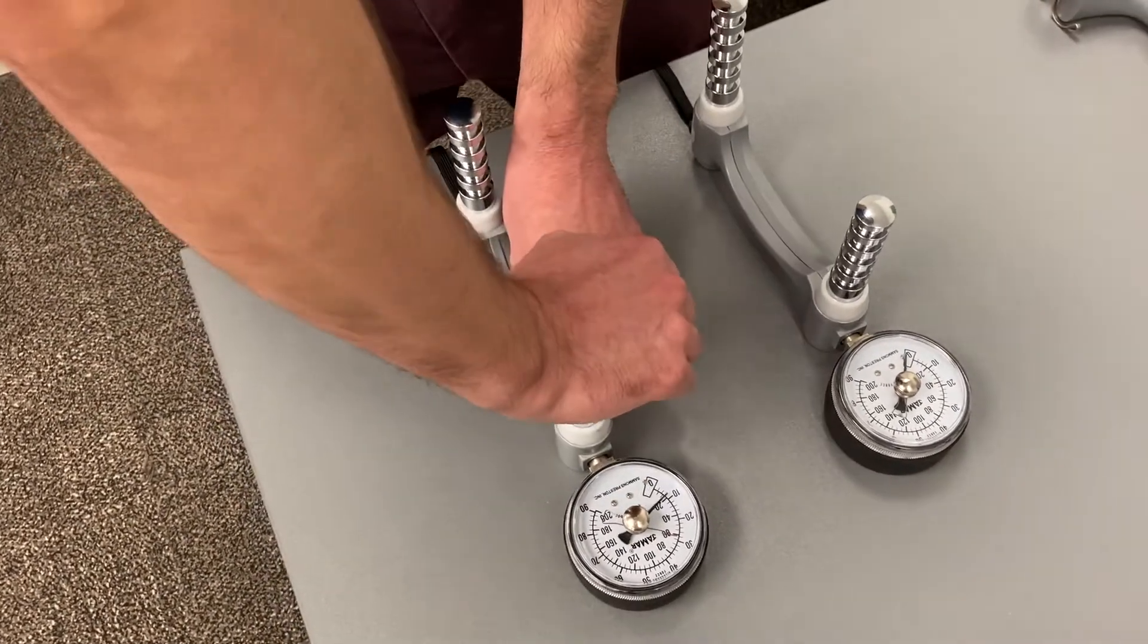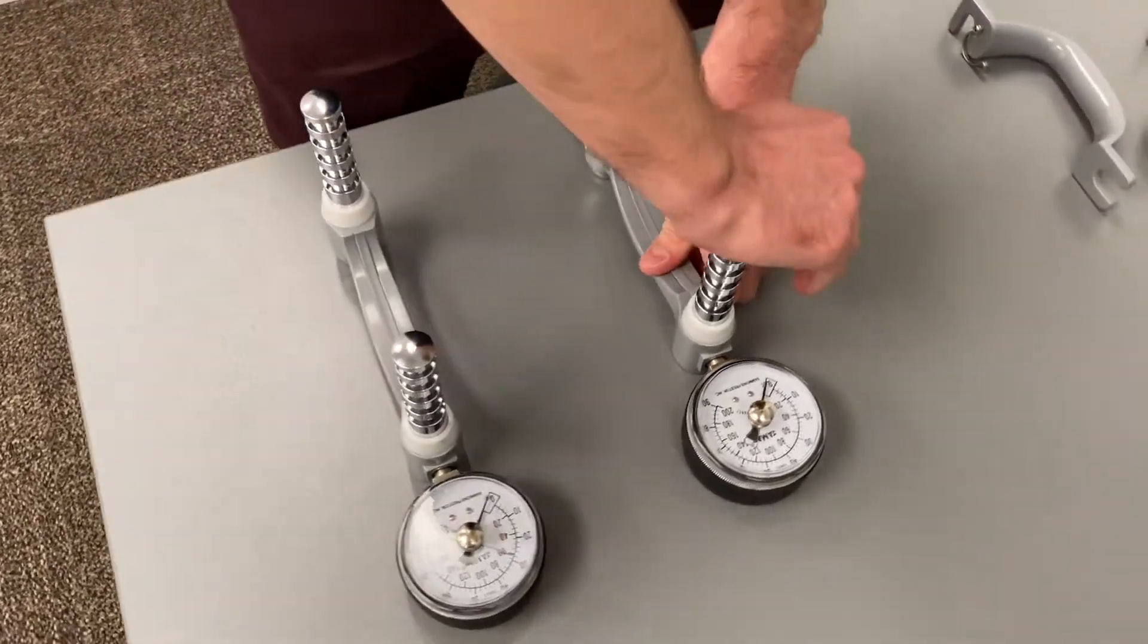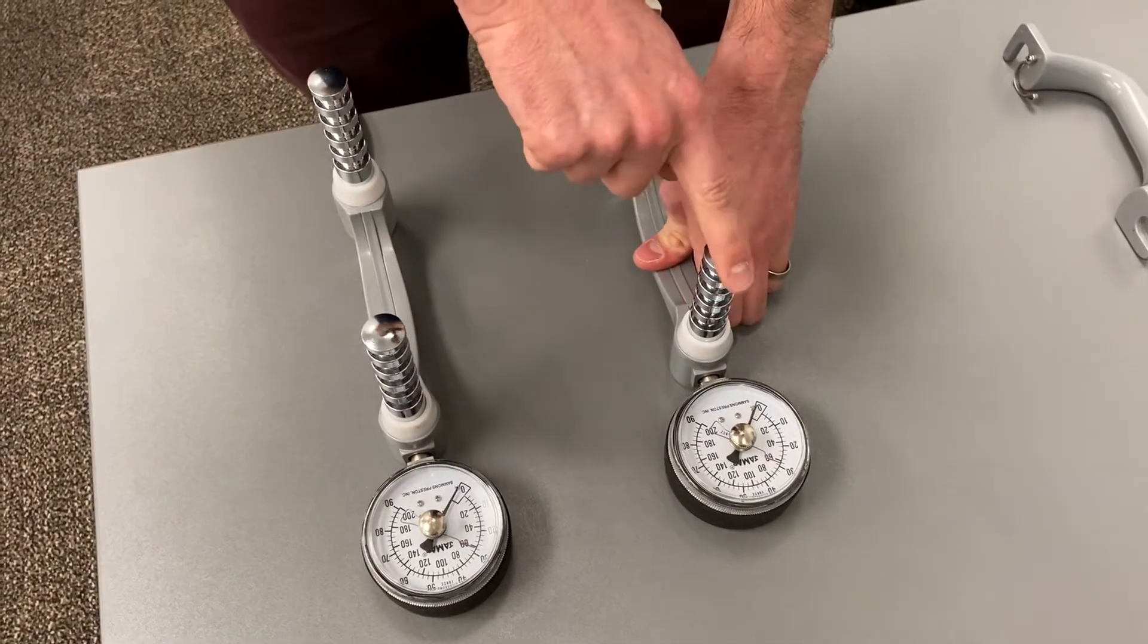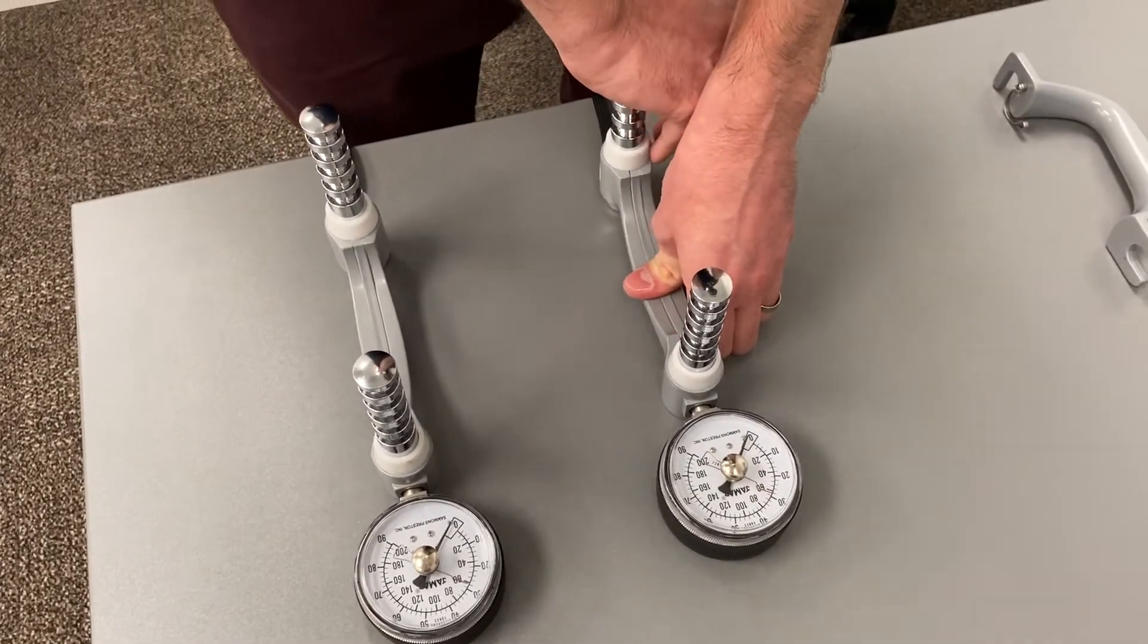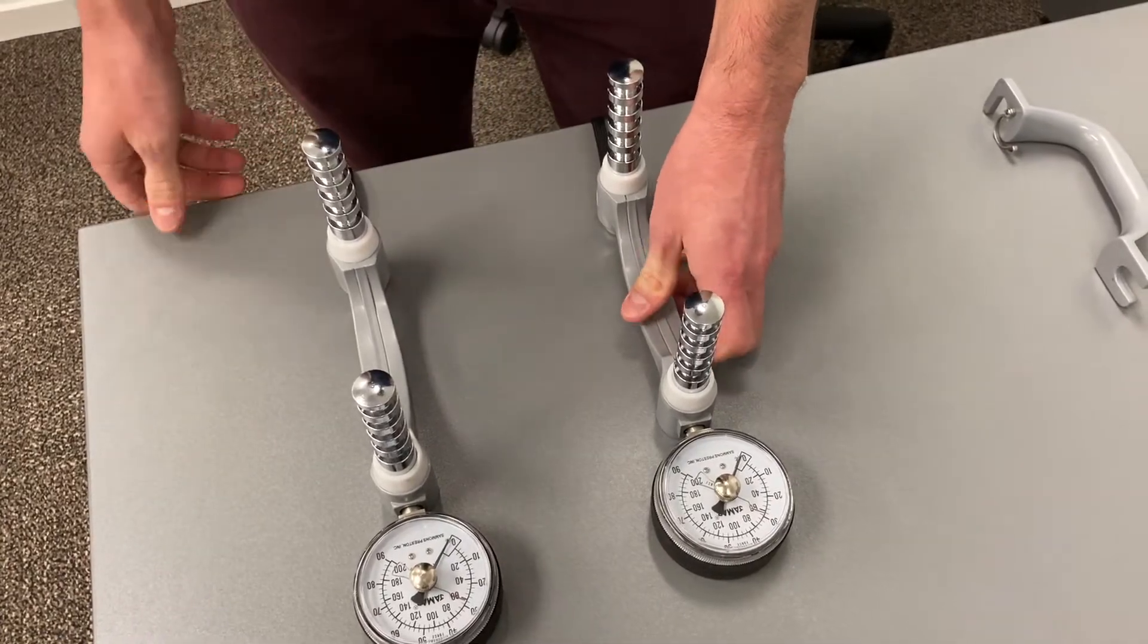They're working just fine as you can see on the dial there. And then if we test this one, this is an example of one that is working fine at the top but not at all at the bottom. Therefore this dynamometer is broken so we wouldn't go on to calibrate that one.